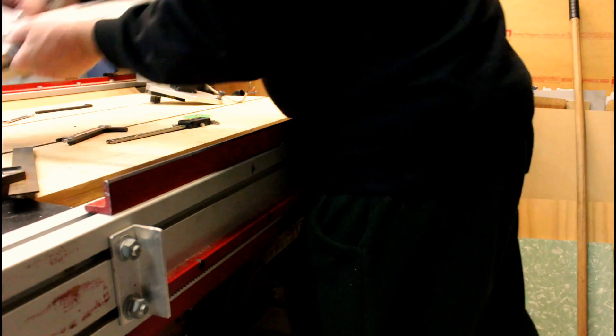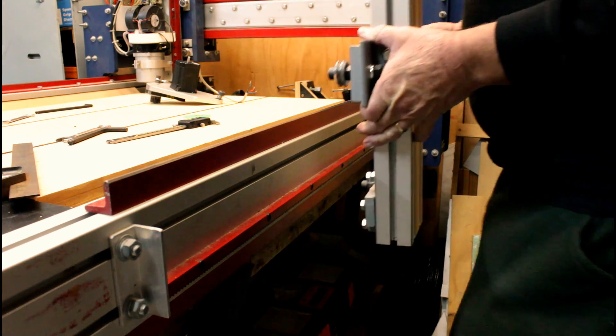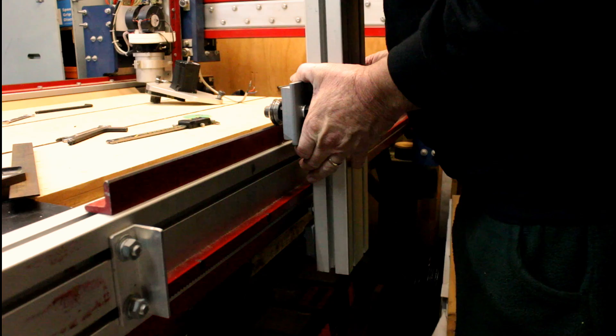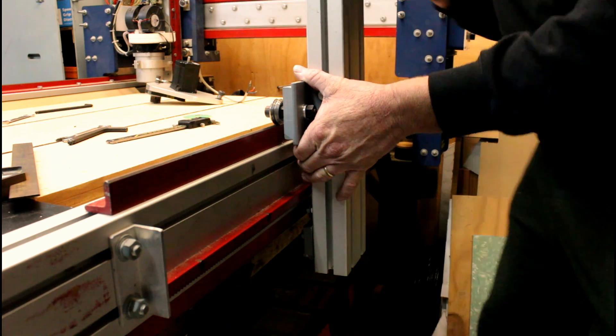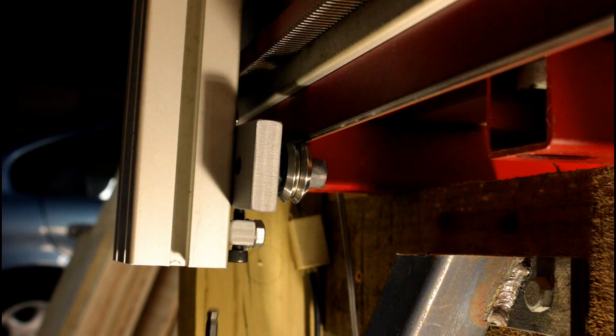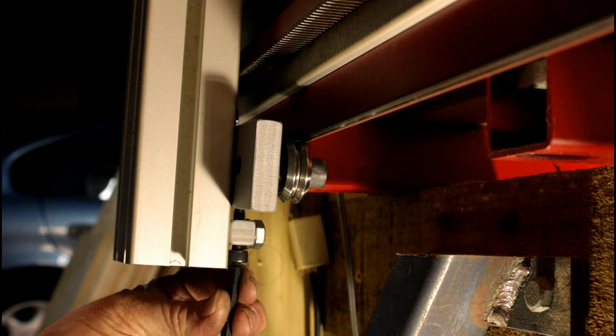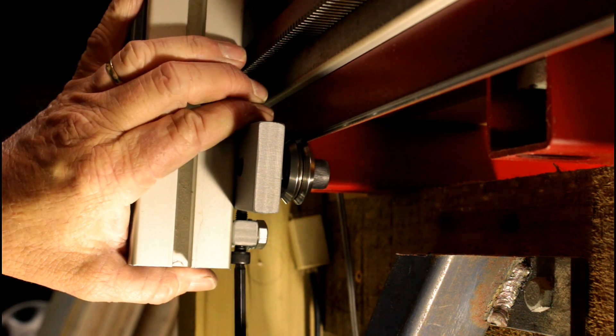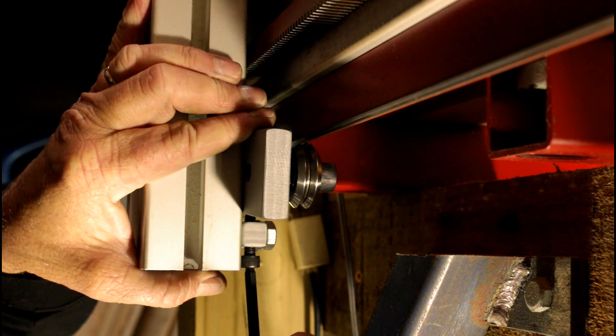It is now time to attach it to the table. It simply hooks over the top V-rail, and then using an Allen key, I can undo the set screw at the bottom. And then once the V-bearing is in an approximate location, I can tighten it up.